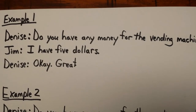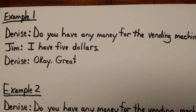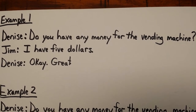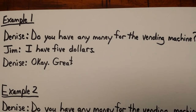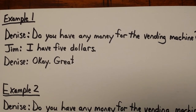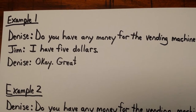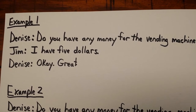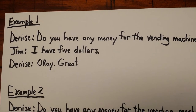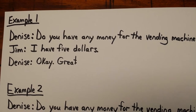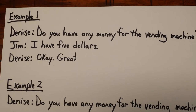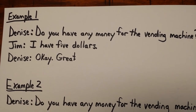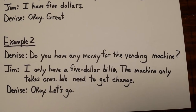In example one — Denise: do you have any money for the vending machine? Jim: I have five dollars. Notice that Jim did not say 'I have a five dollar bill.' He only says the amount of money, which is five dollars. The word 'bill' is used when we're talking about the actual physical object, but he's talking about the quantity — the amount of money he has.